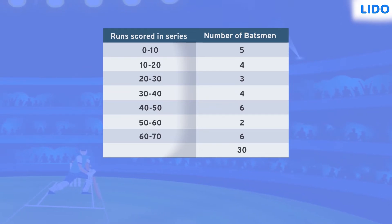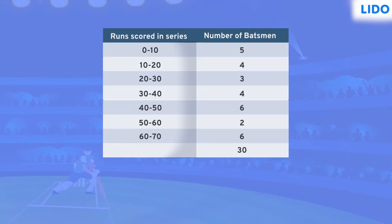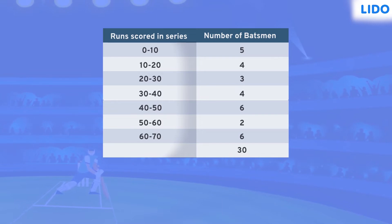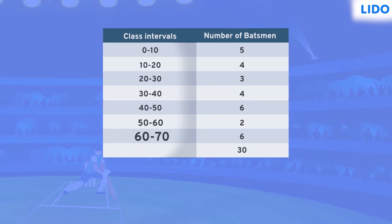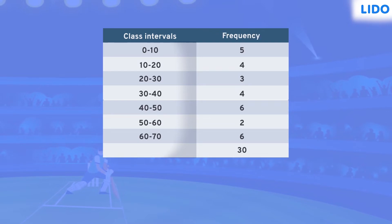The runs scored by batsmen in the series and the number of batsmen are presented below. This data can be expressed as a frequency distribution table in the form of continuous class intervals from 0 to 10, 10 to 20, 20 to 30, and so on. The column representing the number of batsmen is nothing but the frequency of each class.